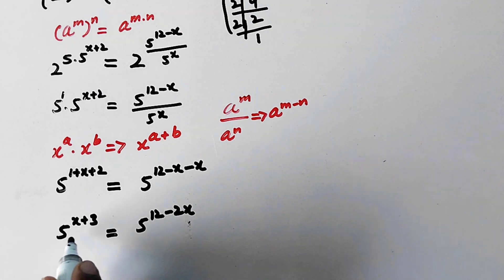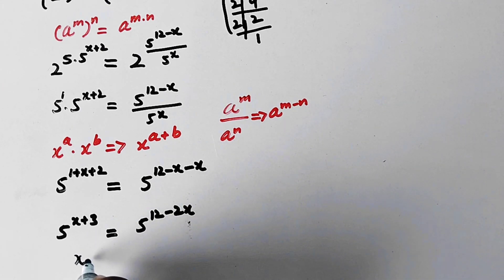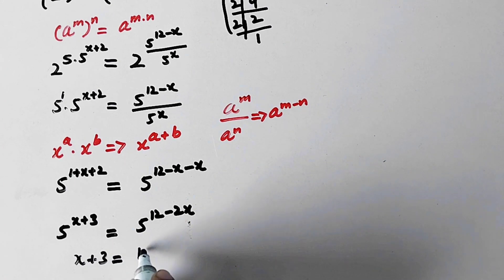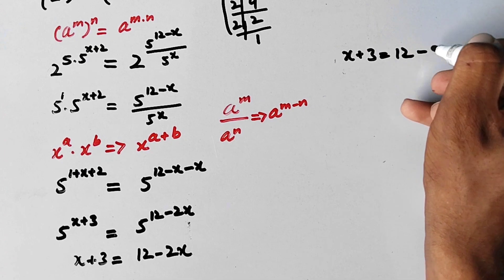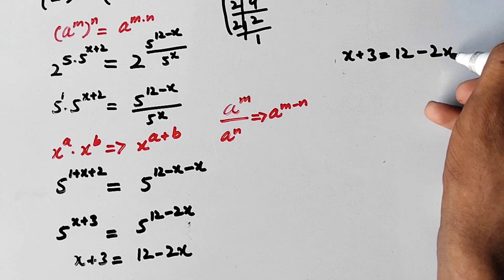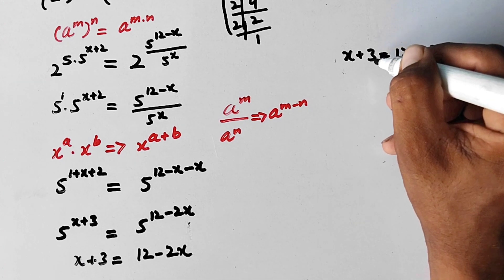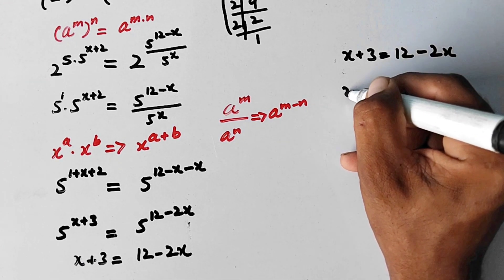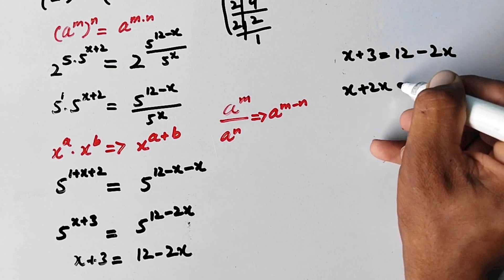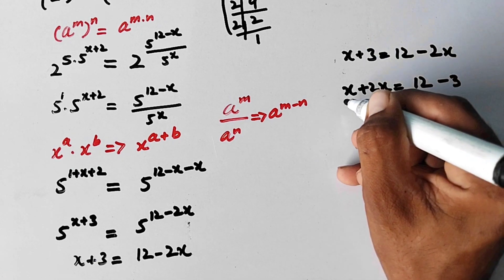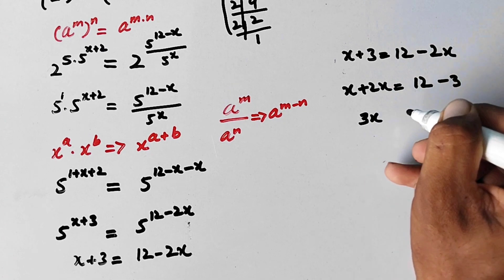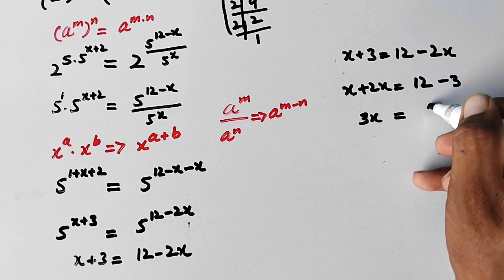Here again we can see that the base on both sides is the same. So we can compare the powers and write x plus 3 is equal to 12 minus 2x. Now we will write the x values on one side and the constant values on the other side. So we get x plus 2x equals 12 minus 3, which gives us 3x equals 9.